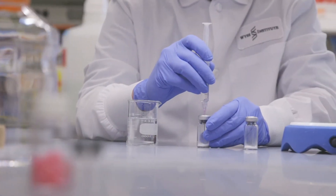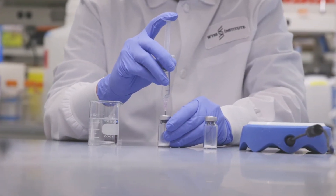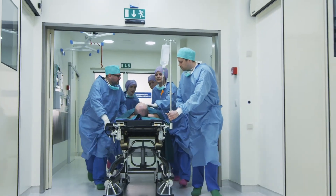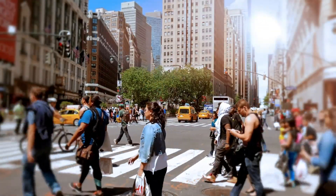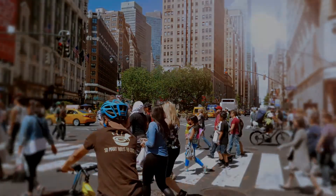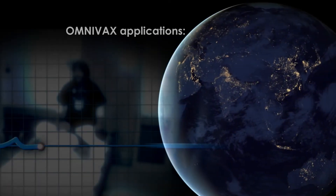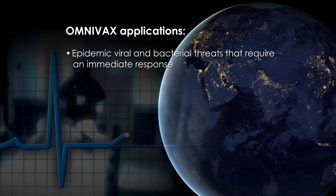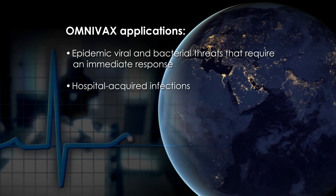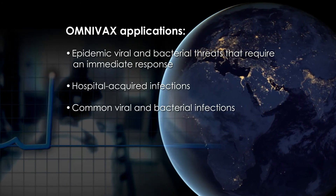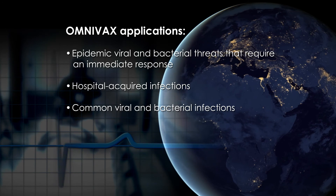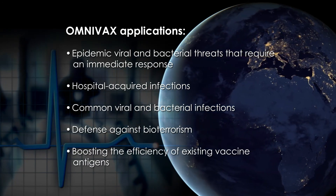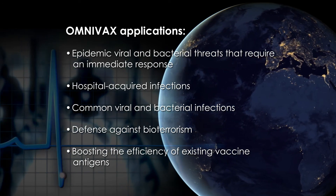Omnivax-generated vaccines are safe, can be fabricated rapidly and easily, and used to treat both recurring infections as a therapeutic vaccine, or to prevent infections as a prophylactic one. Omnivax applications include epidemic viral and bacterial threats that require a rapid response, hospital-acquired infections, common viral and bacterial infections, defense against bioterrorism, and boosting the efficiency of existing vaccine antigens.